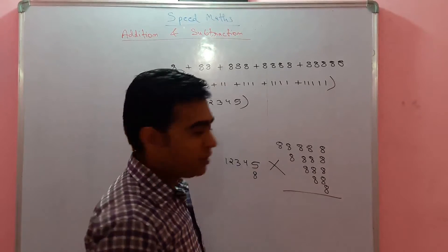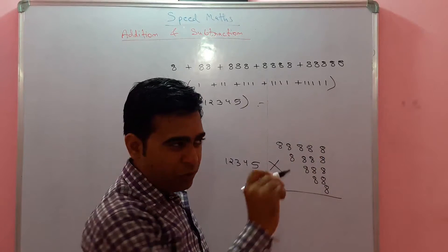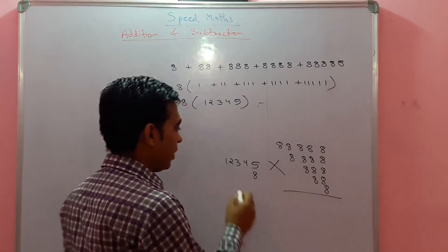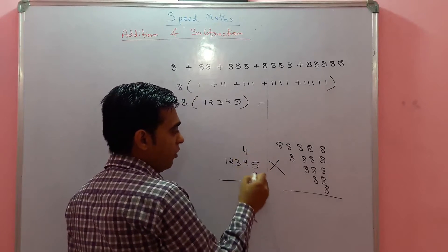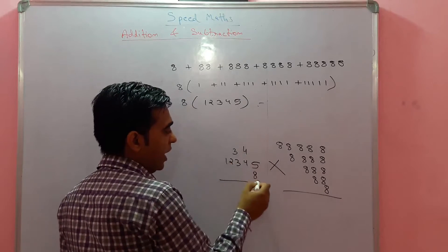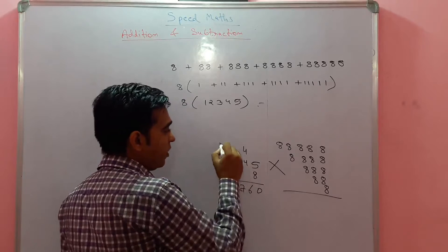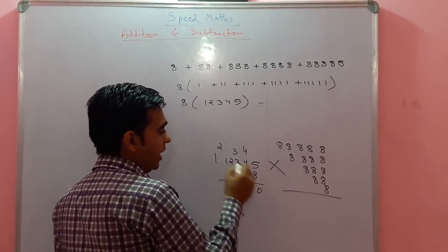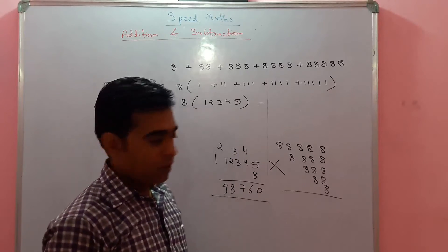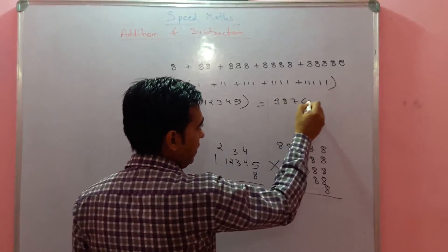If you draw even a single line, you waste one second, and one second is very important. So 5 × 8 is 40. Working through: 4 × 8 = 32, plus the carried 4 = 36. 3 × 8 = 24, plus 3 = 27. 2 × 8 = 16, plus 2 = 18. 8 × 1 = 8. The answer is 98760.